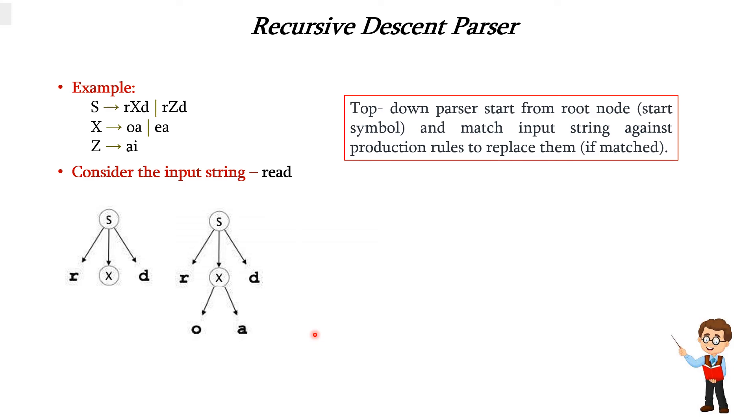So if the production does not match, we can backtrack and find another rule. We are backtracking to X again and we are applying the next rule, that is ea. Now, instead of oa, we are substituting ea in the place of X. So this is the next production.